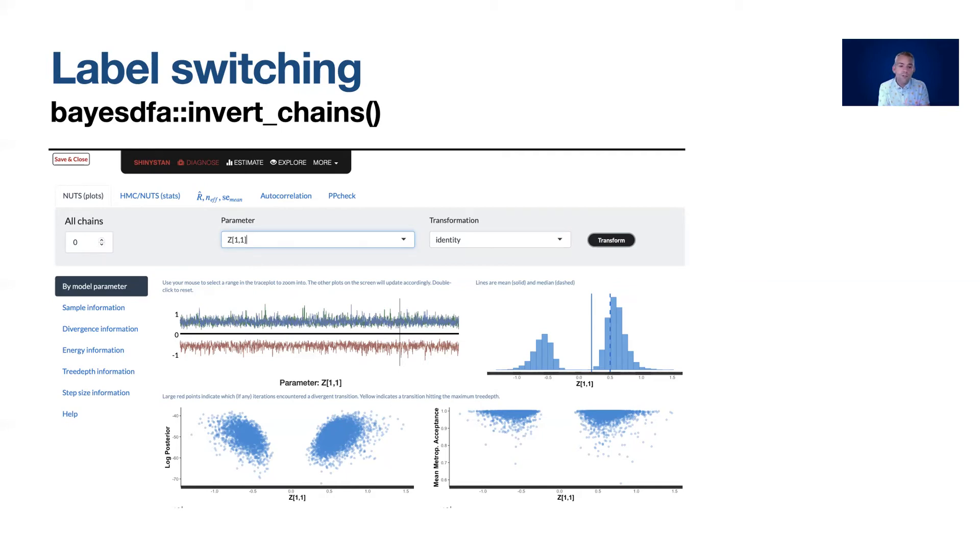But on closer examination here using something like the shiny stan dashboard we can see that the red chain on the bottom is converging on some parameter estimate that's the mirror image of the same parameter estimate that the blue and the green chains are converging on. We can see the same thing with the posterior distribution on the right where the posterior is multimodal because the red chain is only exploring that negative region whereas the blue and the green are exploring the positive.